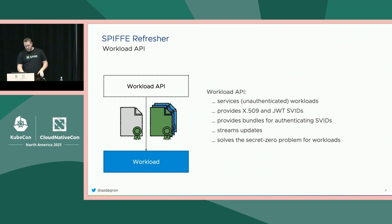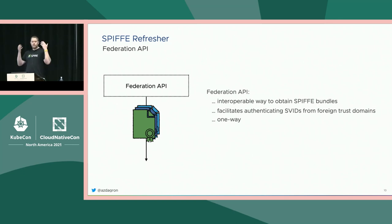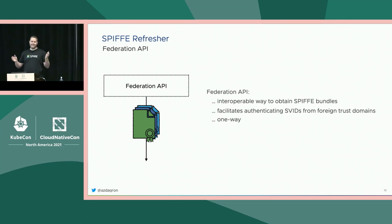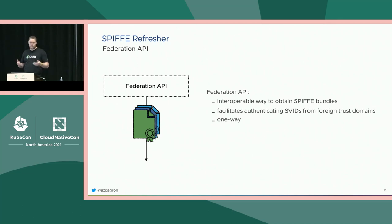The last thing we'll talk about for SPIFFE is federation. How do other trust domains receive these documents? If I have two trust domains and they want to authenticate the SVIDs produced from each other, they need to get their hands on the SPIFFE bundle material for the foreign trust domain. In the federation specification there's something called the bundle endpoint — a simple HTTPS endpoint you talk to to obtain the SPIFFE bundle. There are rules on how you authenticate that endpoint with a couple of different profiles. This is the way a foreign trust domain obtains the bundle for your trust domain so they can verify the SVID documents that come out of your trust domain.